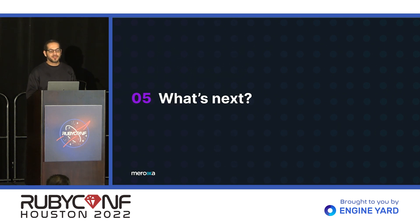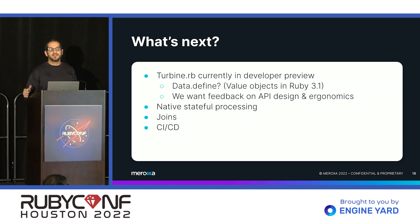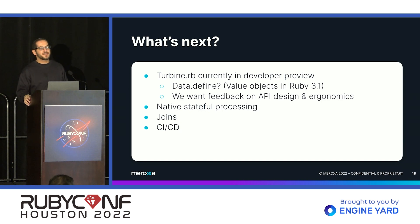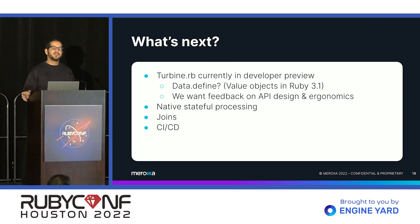What's next for Turbine and Maroxa? Turbine RB is still in relatively early developer preview and we're looking for feedback — we want people to use it, try it out, and tell us how to improve it. We're super focused on developer experience. Ruby 3.1 introduced the idea of a value object or data class, which introduces an immutable struct — that seems like it would be good for this use case where records come in as immutable objects and you use methods defined on them to manipulate them. We'd love to hear from users whether the API works or should be changed.